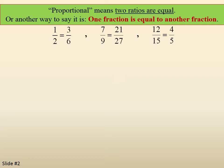Here's some examples. 1/2 equals 3/6, 7/9 equals 21/27, and 12/15 equals 4/5. Each of these are proportional because the ratios are equal: 1/2 does equal 3/6, 7/9 does equal 21/27, and 12/15 does equal 4/5.